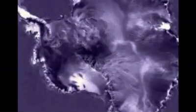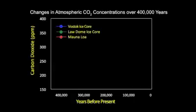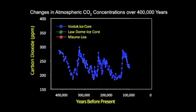Scientists collect ice cores from the Antarctic and other ice fields and measure CO2 concentrations in trapped air bubbles. By analyzing CO2 in air bubbles at different depths, scientists can reconstruct changes that occurred in the Earth's atmosphere over thousands of years. For 400,000 years, CO2 concentrations fluctuated but never exceeded 300 parts per million.